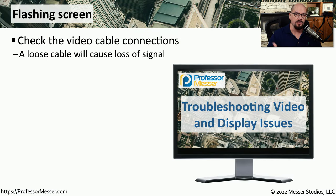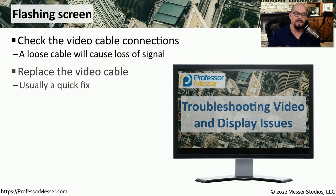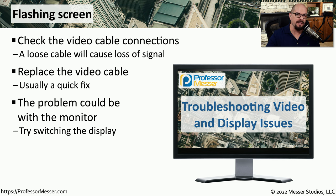There may be some cases where you're using your monitor and everything is working normally, and then suddenly there's a flickering of the image — it's suddenly there and then not there, and then suddenly back again. This is often caused by a loose cable. So you can reseat the cables or replace it with a new cable, and you'll no longer have the flickering issue. Replacing the cable is a very quick fix, and it often resolves this issue. But if the problem is with the monitor itself, then you'll need to replace the entire display.